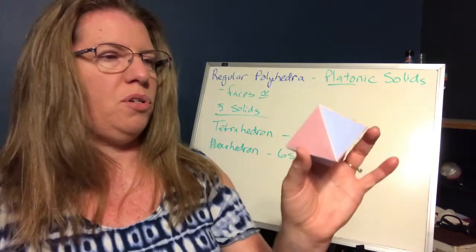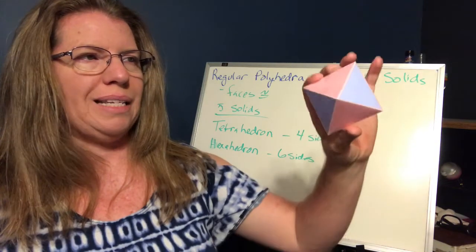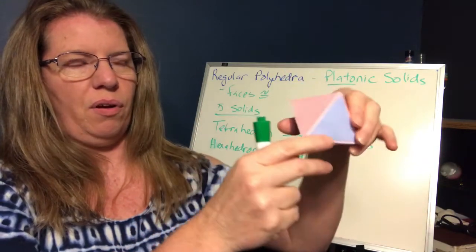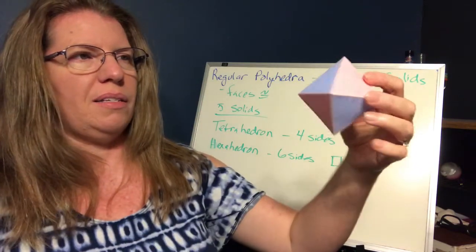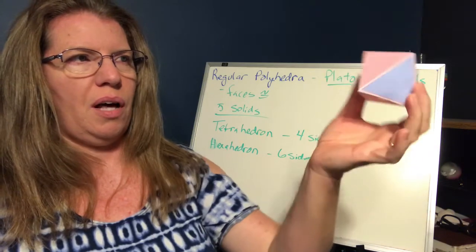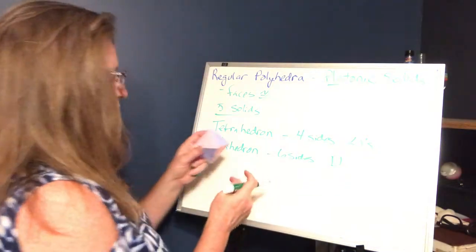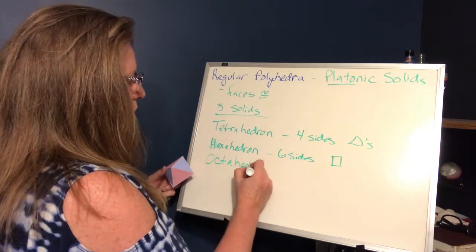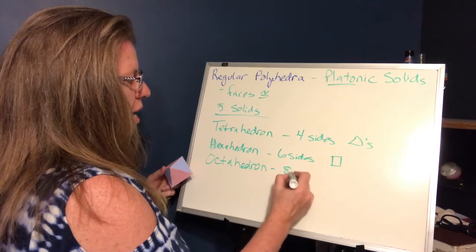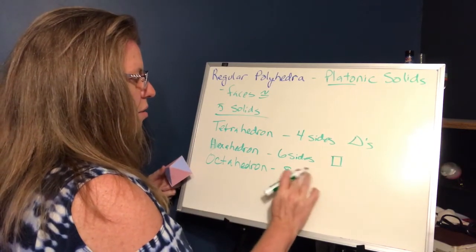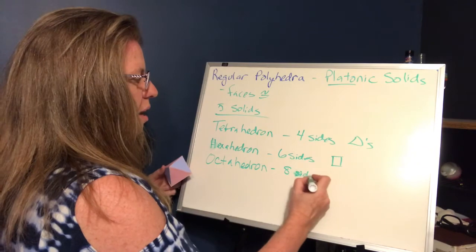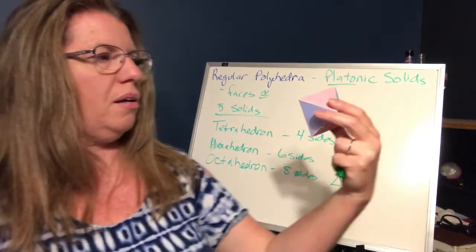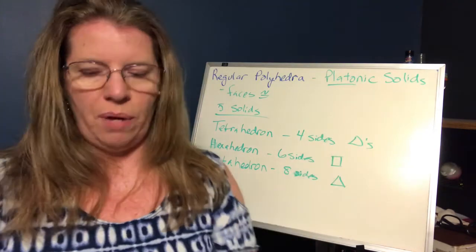From there we go up to eight sides. It's kind of like two pyramids stuck together with a square base — four triangles on top, four triangles on the bottom — making an eight-sided figure. This is our octahedron: eight sides, all triangles, all regular triangles.